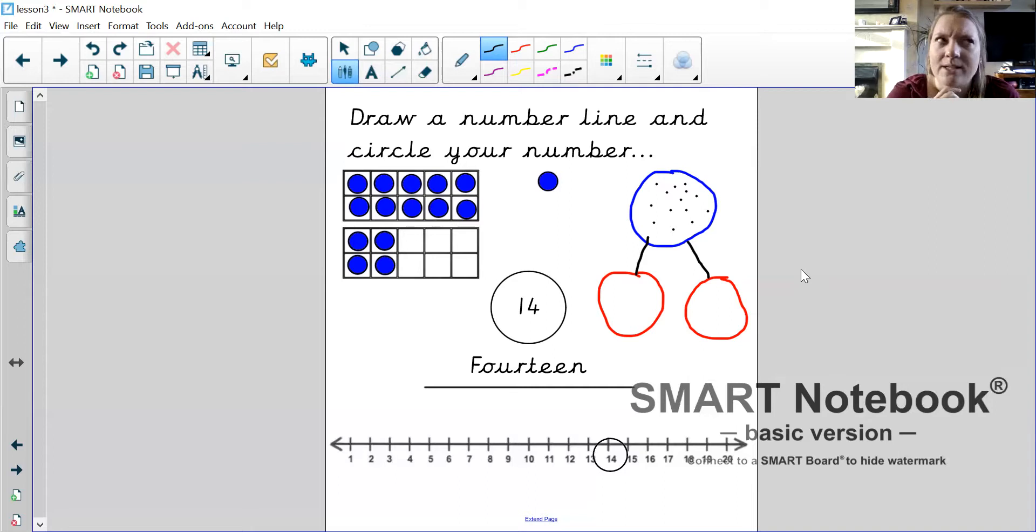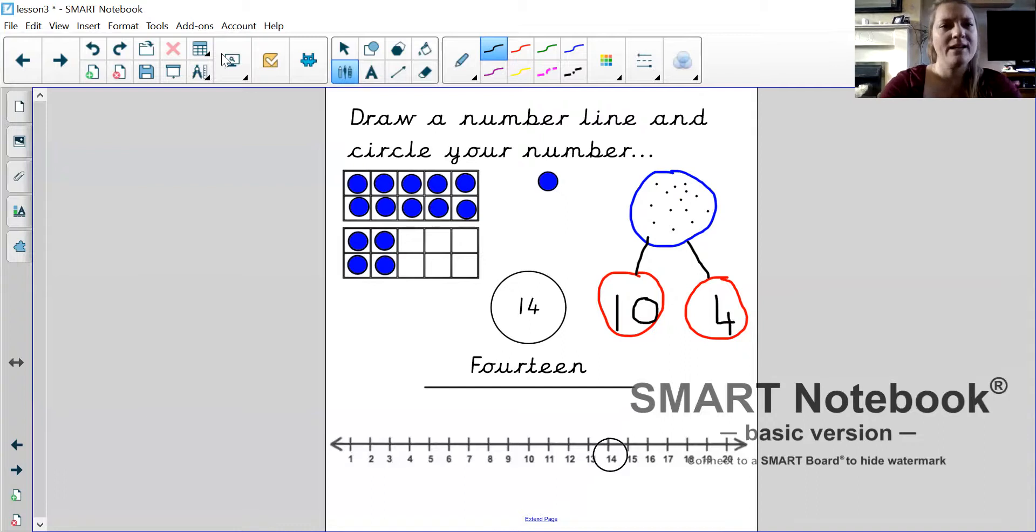There's lots of ways that we can split our numbers. Mine, for example, I could split into 10 and 4, because I know that 10 add 4 equals 14. So in this case, 14 is the whole. 10 and 4 are the parts. Excellent.